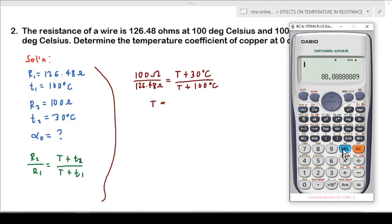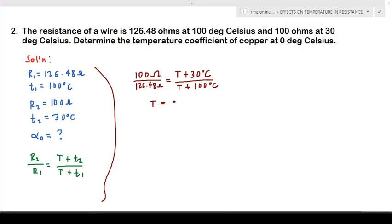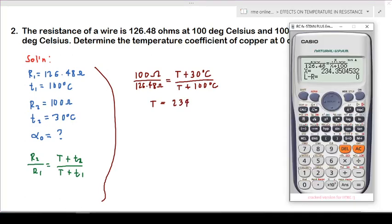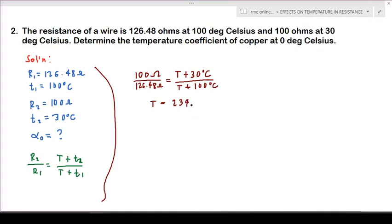Then we get 234.35. So our answer is 234.35 degrees Celsius. Now we know that our alpha, or the temperature coefficient at 0 degrees, is equal to the reciprocal of our absolute temperature.